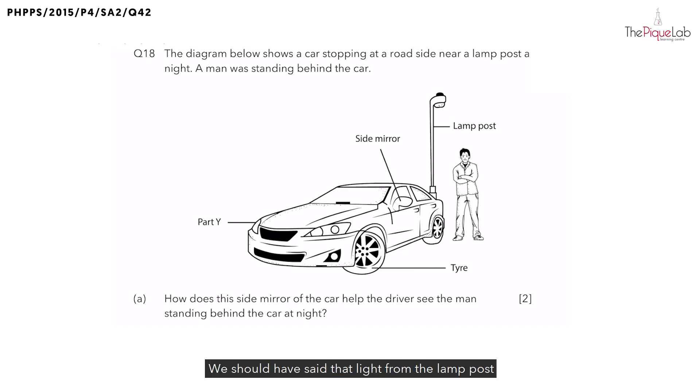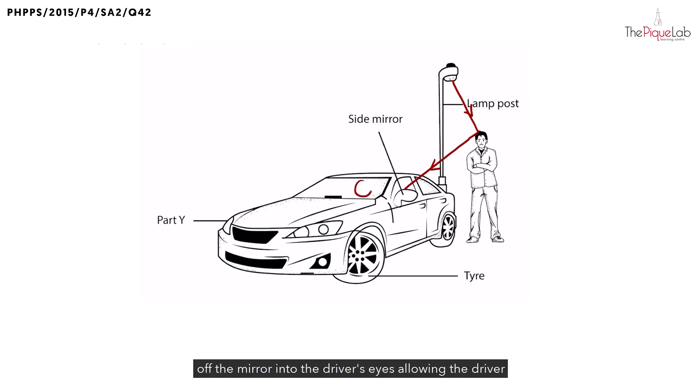So instead of writing like that, what they should have done is another way. So how do we craft the answer? We should have said that light from the lamppost that shines on the man is actually reflected off the man and travels into the mirror, which is then reflected off the mirror into the driver's eyes, allowing the driver to see the man behind the car.